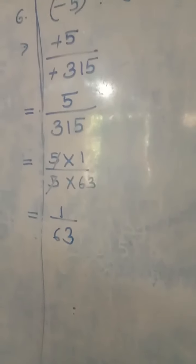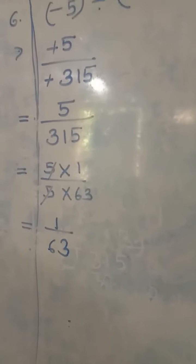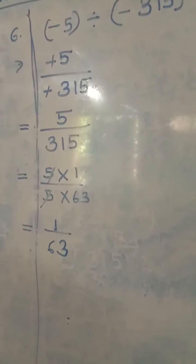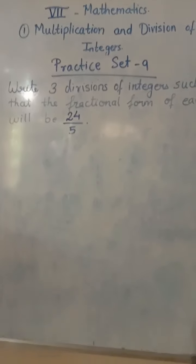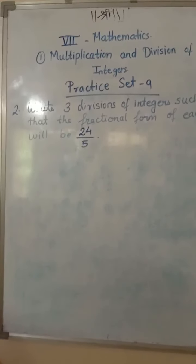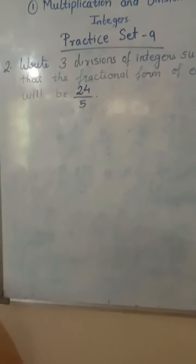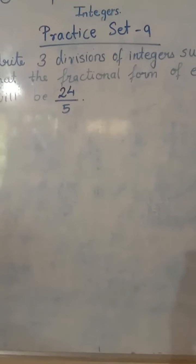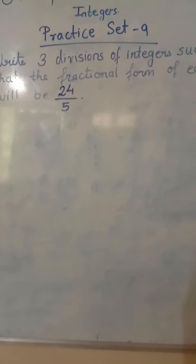I have solved 6 sums out of 10. The remaining 4 you can see in your textbook. First solve these 6 sums, then solve the remaining 4 on your own. Now we will go to the second question of Practice Set 9: write 3 divisions of integers such that the fractional form of each will be 24 upon 5.